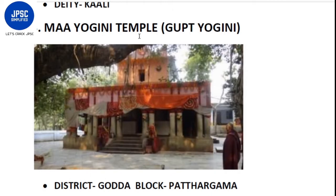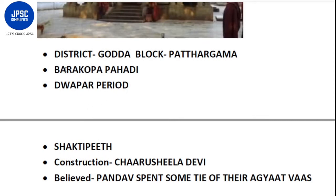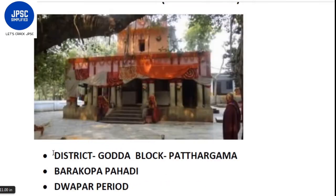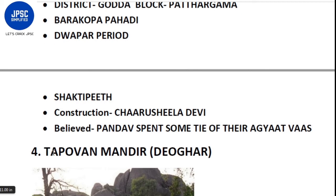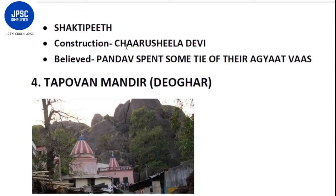The third temple is the Maayogini temple, also known as the Gupta Yogini temple. It is located in Goda district, Pathargama block, over Barakopa Pahari. This temple is said to be of the Dwapar period. It is also considered to be a Shakti Peeth - the place where body parts of Sati fell. Its construction was done by Charushila Devi. It is believed that the Pandavas spent some of their time of Agyatvas here.